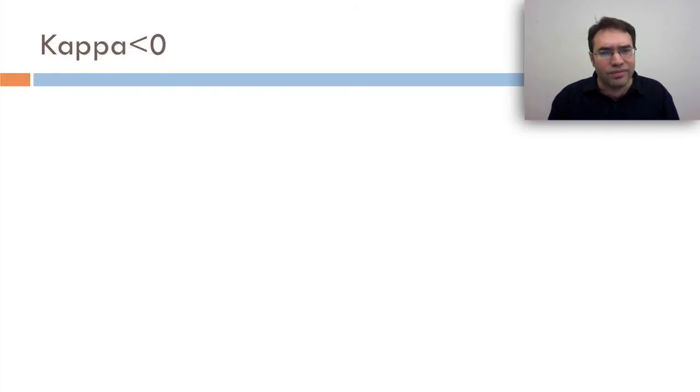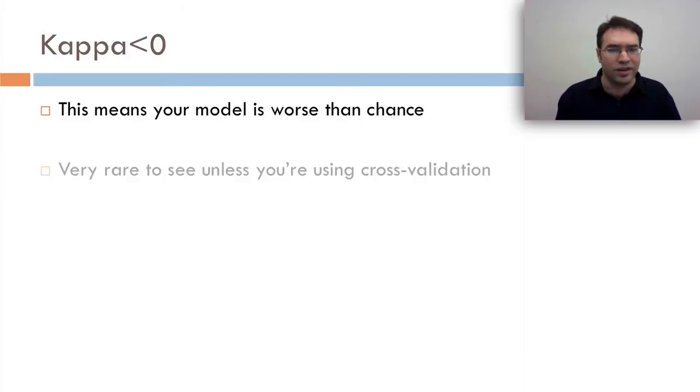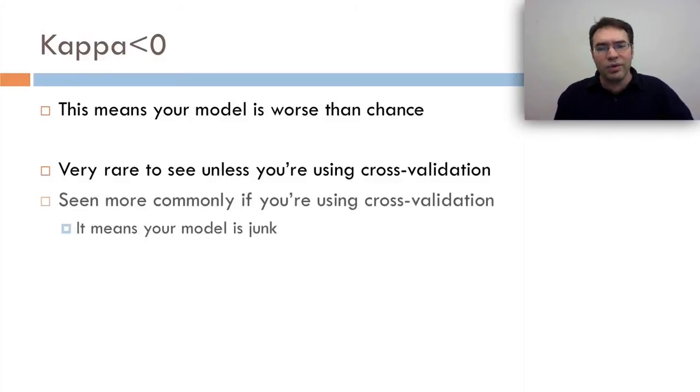What if kappa is less than zero, but greater than negative infinity? In this case, this means your model's worse than chance. Now, people didn't really see this very often when they used to use kappa for inter-rater reliability back in the day. But you do see it more often if you're using cross-validation, in which case it means your model's junk. And what it really means is that your model goes in opposite direction in the training set and in your test set, which really is not something you want. I don't see it very often, but I have seen it in my life.